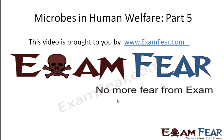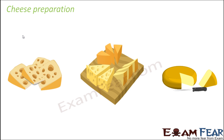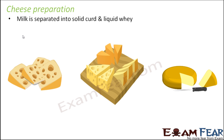This video on microbes in human welfare part 5 is brought to you by examfear.com. Microbes also play a very important role in the process of cheese preparation, which is quite commonly used in various recipes. Cheese preparation is a little related to the way curd is prepared, and the process of curdling is also done to some extent here.